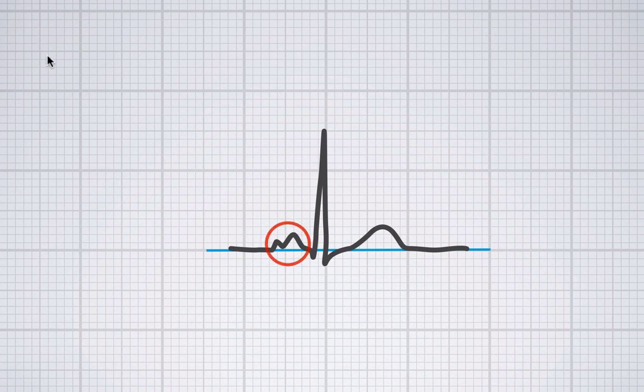In these instances, we also have a second peak of the P wave, usually seen in lead 2, and this entity is called P mitrale. Please note that an enlargement of the right atrium will not cause a prolongation of the P wave. The take-home message is that when the P wave is 0.12 seconds long or above, that usually means that the left atrium is enlarged — we also call this type of P, P mitrale.